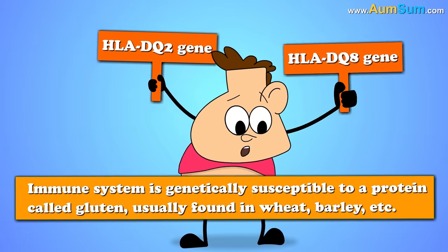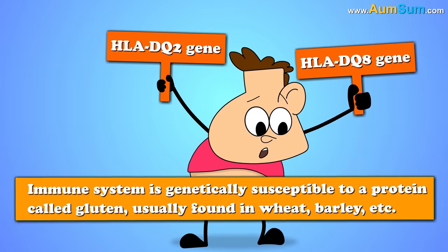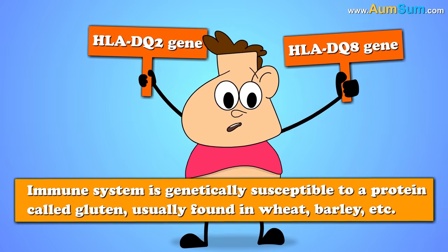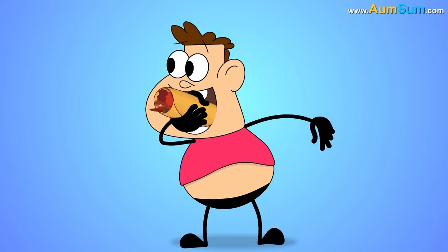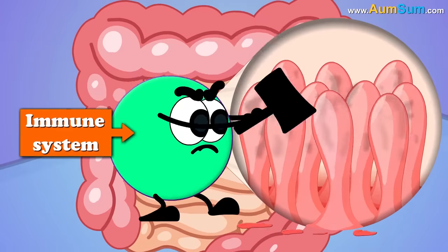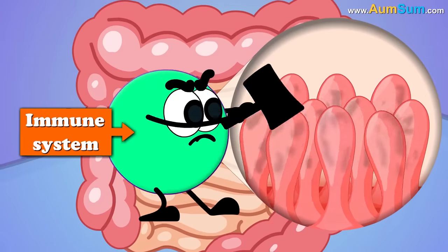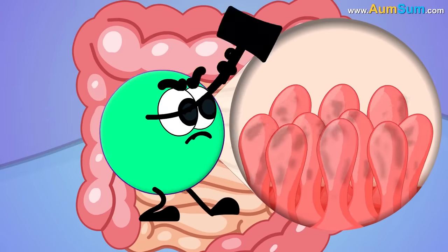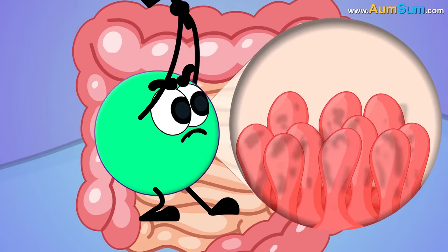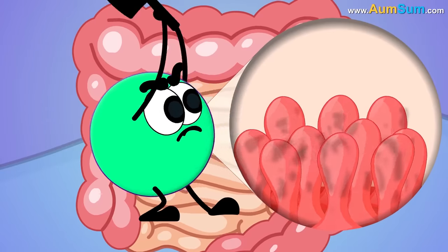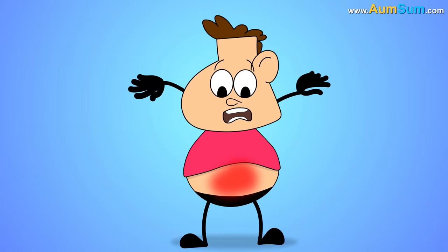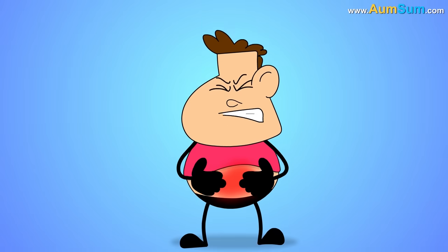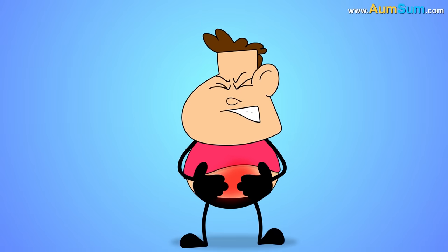Gluten is usually found in wheat, barley, etc. Now, if he eats gluten, his susceptible immune system starts attacking his own villi, thus causing him to develop celiac disease. This leads to inflammation, abdominal pain, etc.